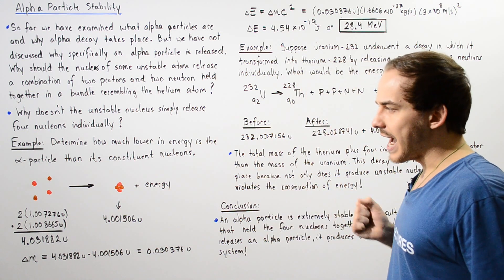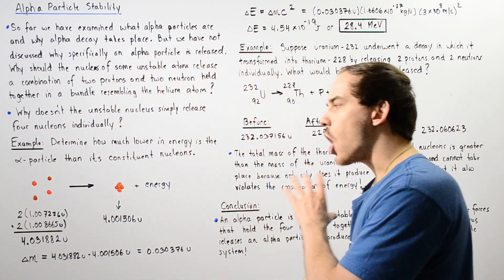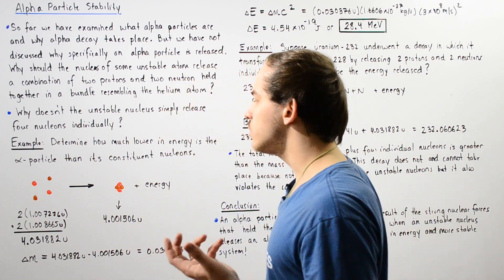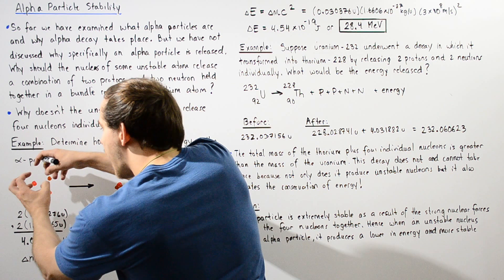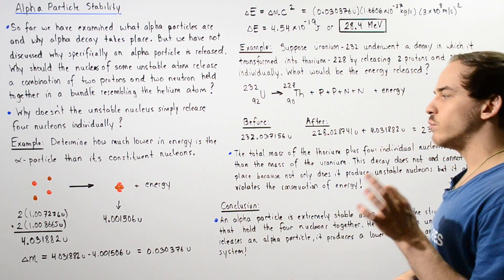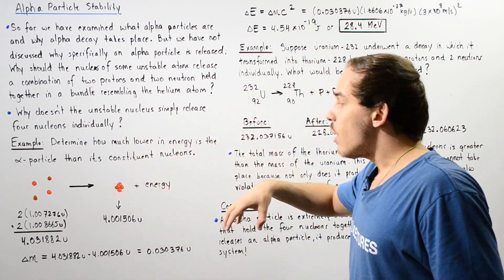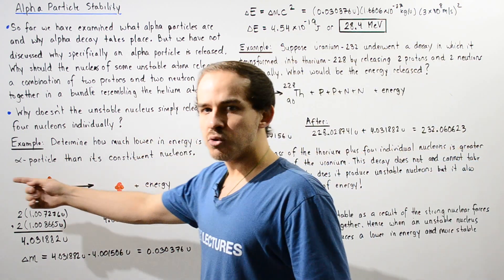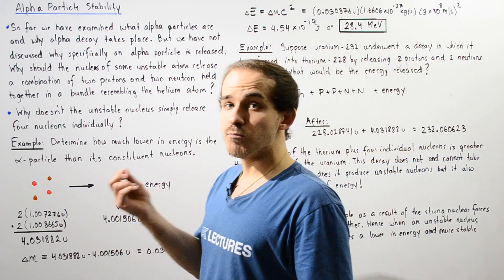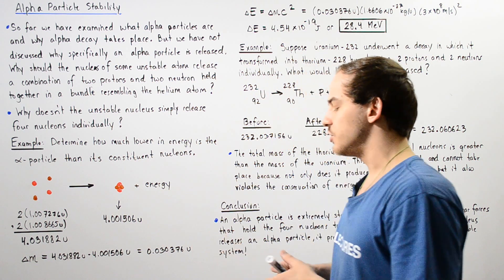So basically in this reaction we have the reactants, we have the four individual nucleons that are not held together in a bundle, that are not held together by strong and weak nuclear forces. Now we basically combine all these four nucleons into this bundle we call the alpha particle. And we want to examine if and how much energy is released. Now if energy is actually released in the process, that means this bundle we call the alpha particle is in fact more stable than the combination of the energies of these four individual nucleons.